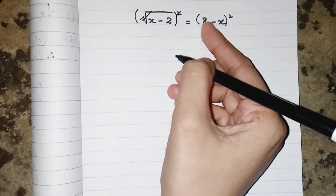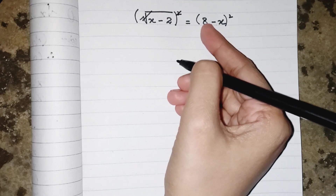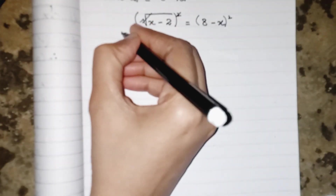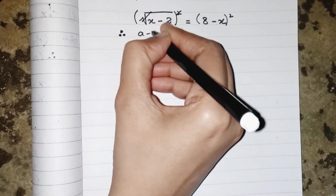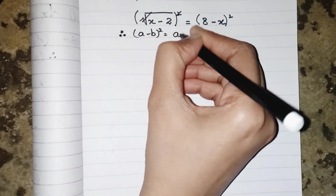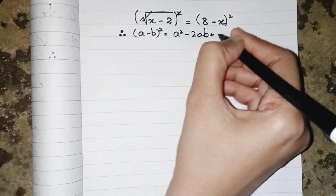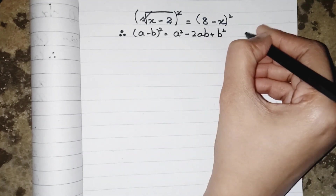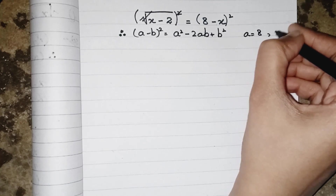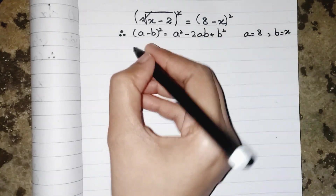On the other side it will become the formula of a minus b whole square. The formula of a minus b whole square is equals to a squared minus 2ab plus b squared, with the value of a being 8 and the value of b being x.